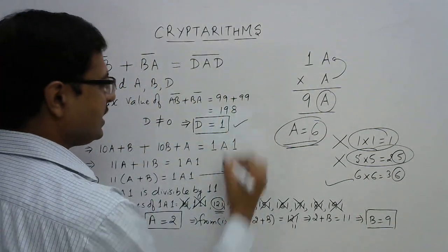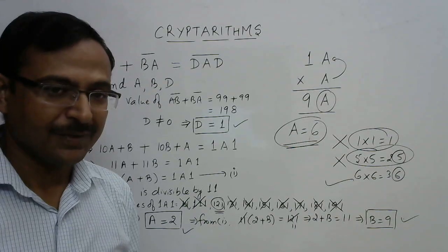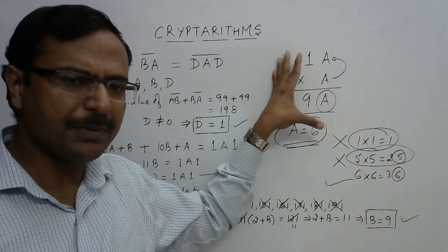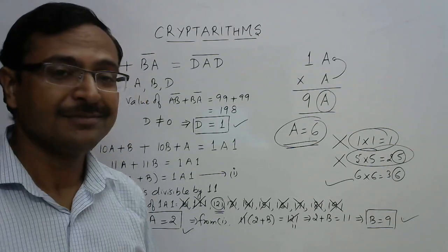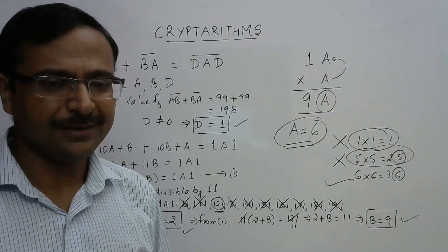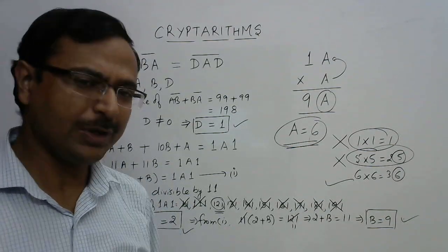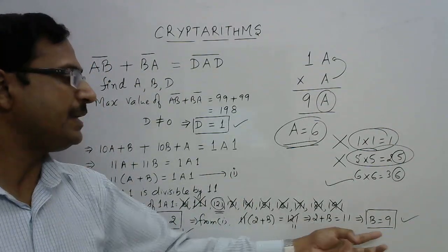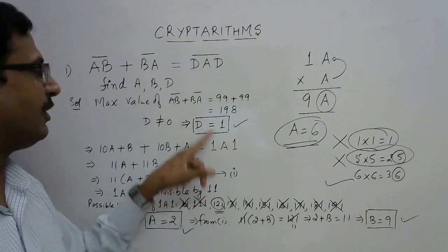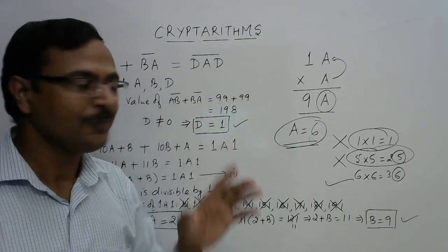So we now have all the values: d=1, a=2, and b=9. We can verify: AB = 29 and BA = 92, and 29 + 92 = 121 = DAD, which gives d=1, a=2, d=1. This confirms our answer is correct.